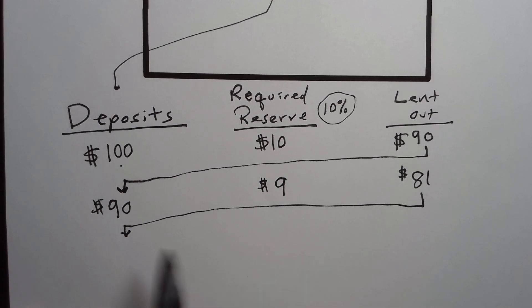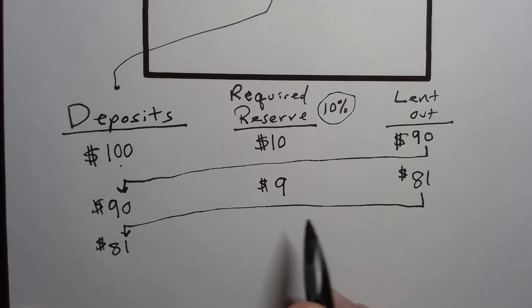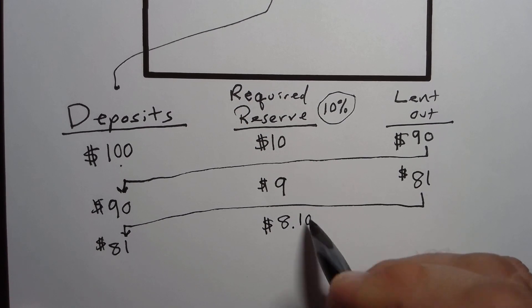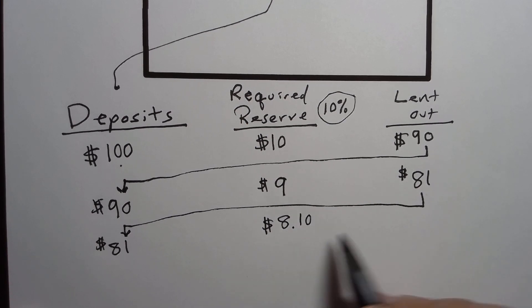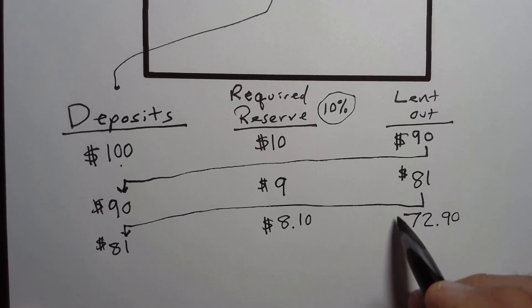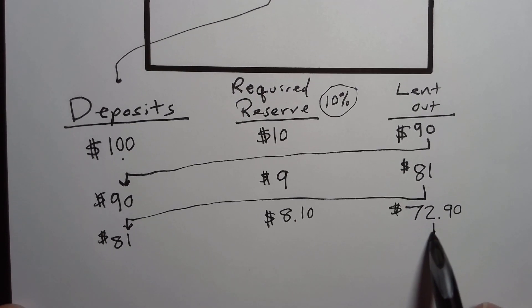They're going to deposit that $81 into this bank. And the fractional reserve of 10% means that they only have to keep on hand $8.10. And they can then lend out the rest of it. $72.90 then gets lent out to yet another customer that then gets paid out.